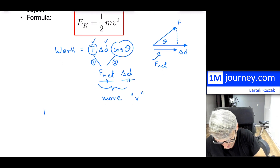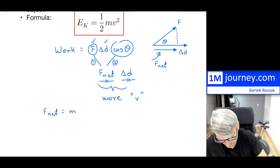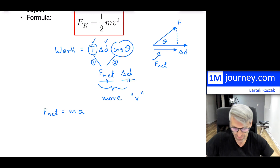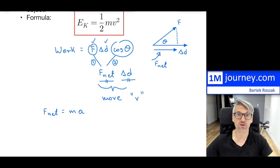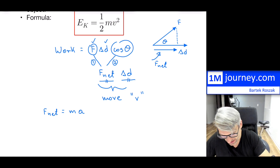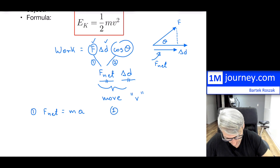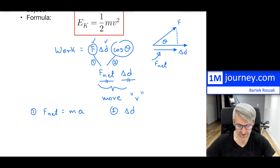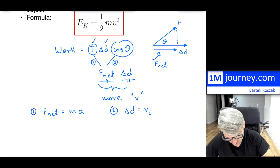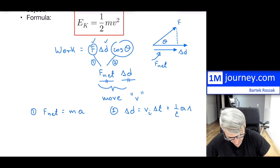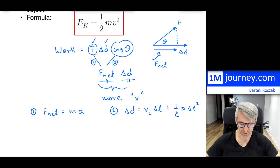The net force from Newton's second law is nothing else but mass multiplied by the average acceleration — mass times acceleration. Acceleration is a vector and so is F net, but here I'm dropping the vector form because I'm assuming motion is in the direction of displacement. For the displacement, from kinematics, one of the equations is: displacement equals initial speed times change in time plus one half times acceleration times delta T squared. That is the actual equation for the displacement.